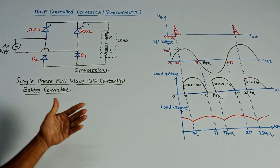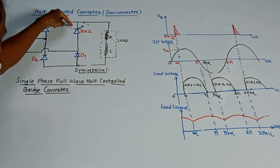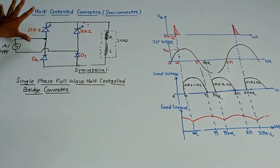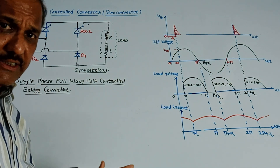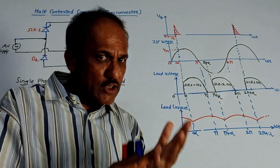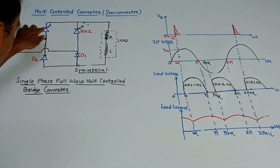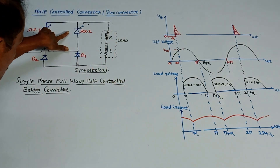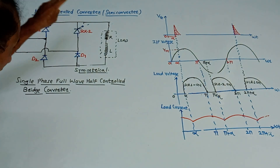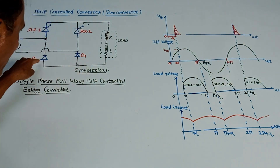Why is it called a bridge converter? This is the circuit diagram for a bridge type of network. What is the major difference? Even though it is a bridge circuit, we are not using four SCRs. We are just using two SCRs, SCR1 and SCR2, and we are using two diodes, D1 and D2.